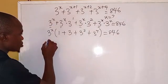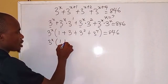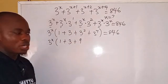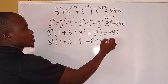So now the next thing we do, we have 3 to the power of x. Let's simplify this bracket: we have 1 plus 3 plus 9 (3 to the power of 2 gives us 9), then this will give us 81, equals 846.